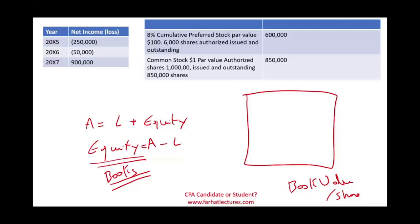In this session, we will compute the book value per share. Simply put, it's the stock price of the company — but not the market stock price. It's the accounting stock price, based on the company's equity. So let's go ahead and get started.